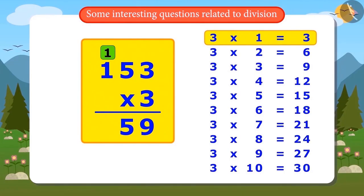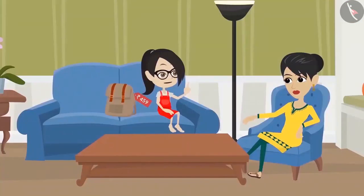After adding the carried over 1, the answer is 4. Oh yes, Mummy. After multiplying 153 by 3, the answer came equal to 459. That means I have divided correctly.